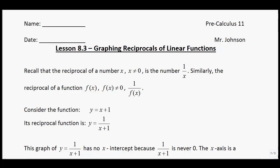Recall the reciprocal of a number x, such that x cannot equal 0, is the number 1 over x. We've dealt with reciprocals many times before. For instance, the reciprocal of 3 is 1 third, because any number is always over 1 and you flip it. If we have 2 thirds, you flip it and get 3 over 2. The true definition of a reciprocal is whatever number you multiply it by to get 1 — so 3 times 1 third equals 1, meaning 1 third is the reciprocal of 3.